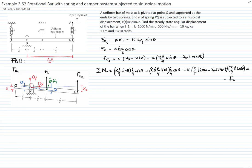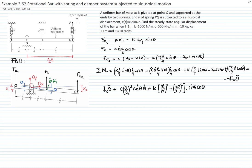All of that equals the mass moment of inertia of the bar about point O times the angular acceleration. Since the bar rotates clockwise, the angular acceleration is negative. The resulting nonlinear equation of motion is: mass moment of inertia times angular acceleration plus C times (L/4)² cosine²(theta) times angular velocity plus K times [(L/4)² + (3L/4)²] times sine(theta) cosine(theta) equals K times (3L/4) times x0 cosine(theta) sine(omega t).